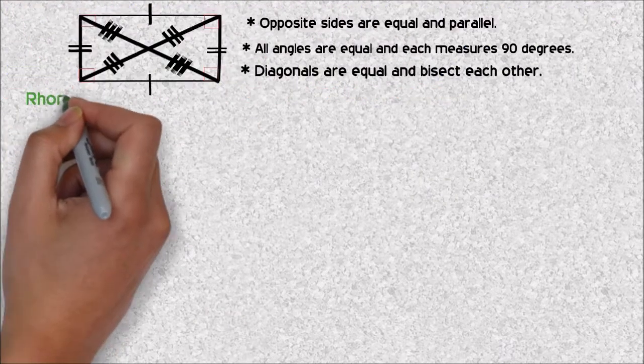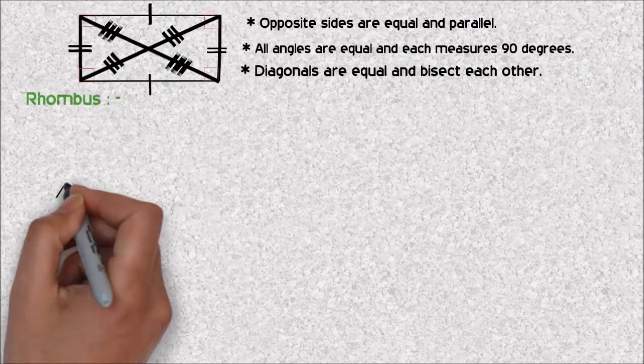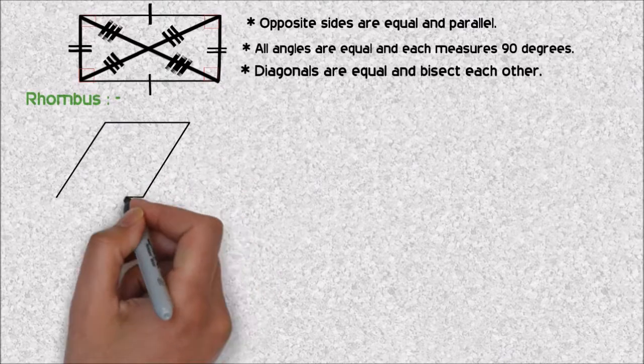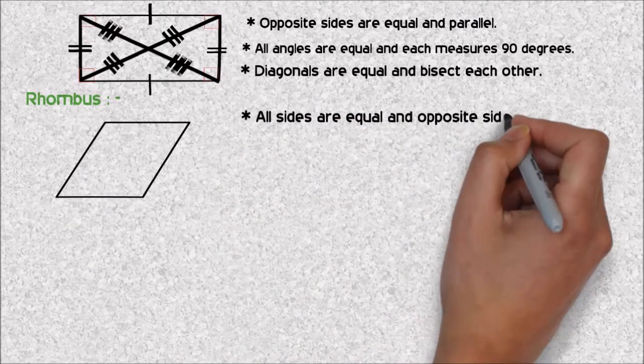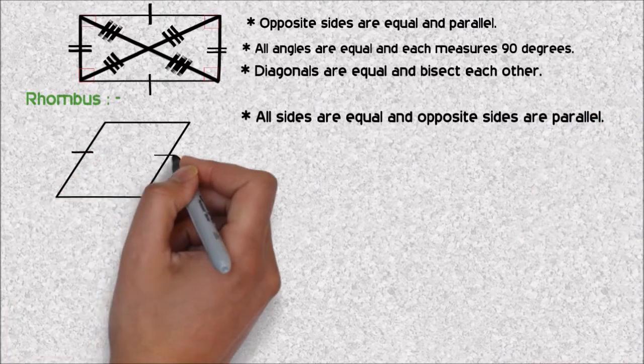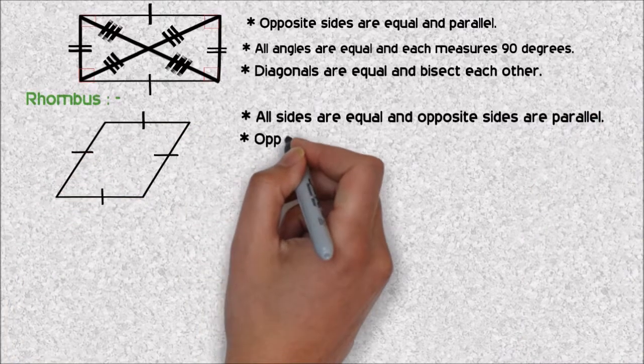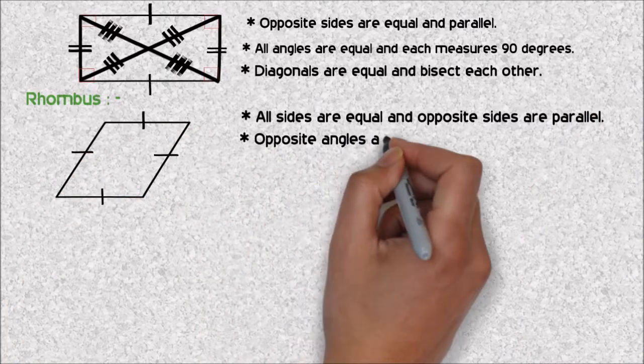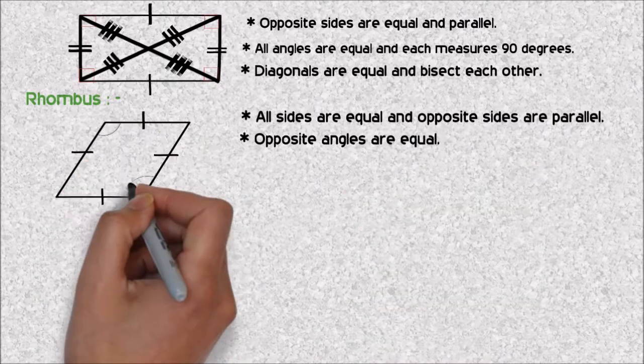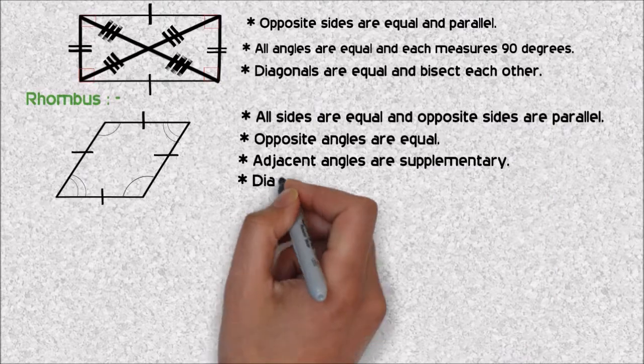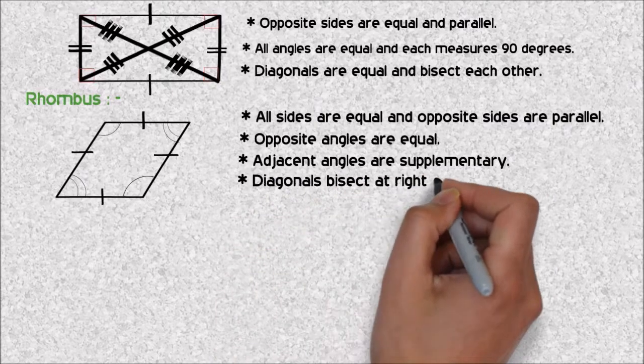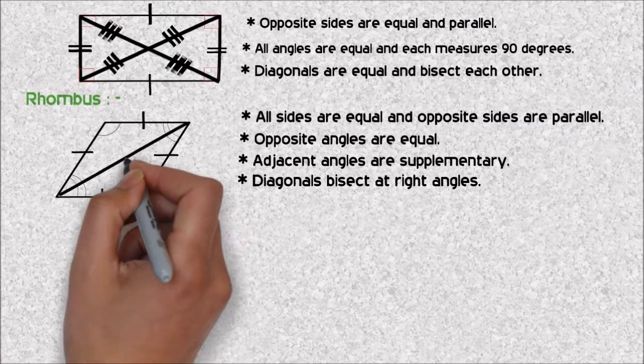Next, see about rhombus. Here, all sides are equal and opposite sides are parallel. Opposite angles are equal, adjacent angles are supplementary, and diagonals bisect at right angles same as in square.